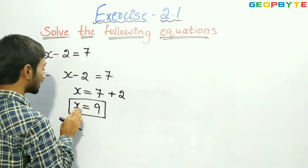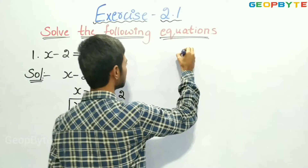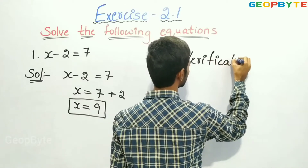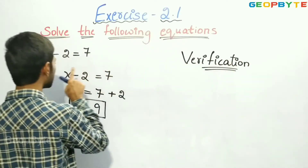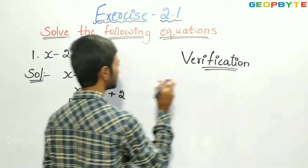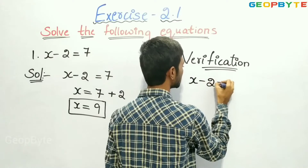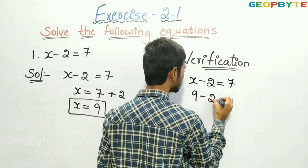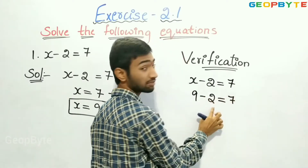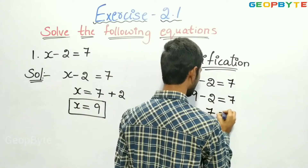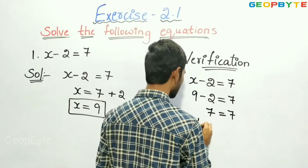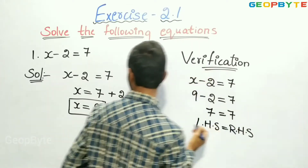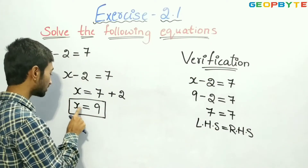So, we got the answer x equal to 9. Now let us check whether x is equal to 9 or not. Verification: the given equation is x minus 2 is equal to 7. The value of x is 9, so 9 minus 2 is equal to 7. Here, we see that LHS is equal to RHS. So, we got the answer correct. That is, x is equal to 9.